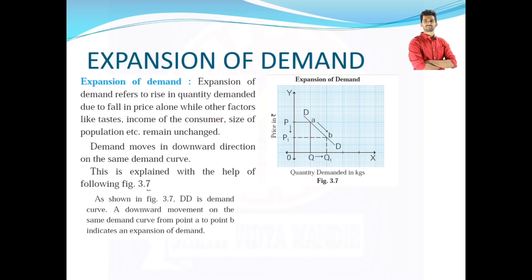While all other factors are remaining same, demand moves in downward direction on the same demand curve. DD is demand curve here. A downward movement on the same demand curve from point A to point B indicates expansion of demand. So when because of price alone there is increase in demand or rise in quantity demanded, it is called as expansion of demand.